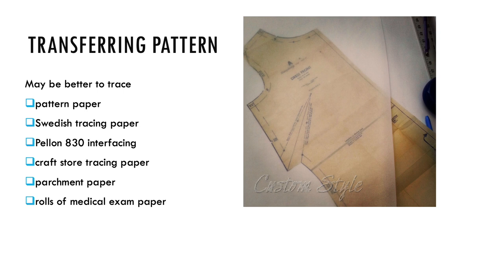While it is an option to cut out the original tissue paper pattern, I don't recommend doing that. If you trace the pattern instead, you can preserve the original pattern and have access to all the other sizes if you choose to make the pattern again, either once you change sizes or if you're making the pattern for someone else. To trace the pattern, you can use pattern paper, Swedish tracing paper, Pellon 830 interfacing, craft store tracing paper, parchment paper, or rolls of medical exam paper.